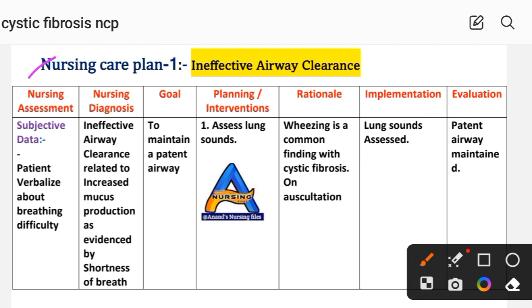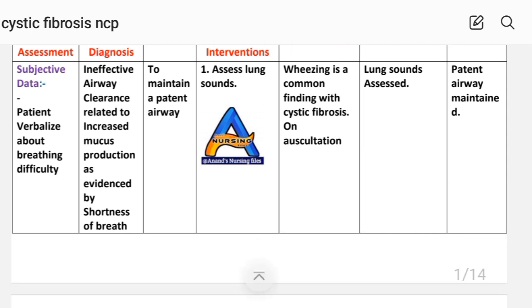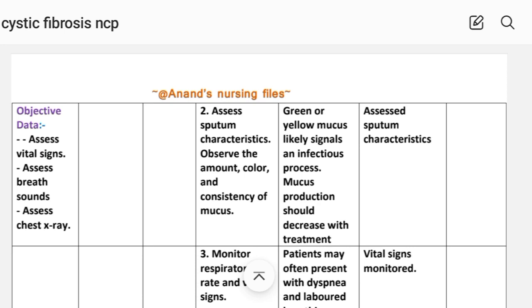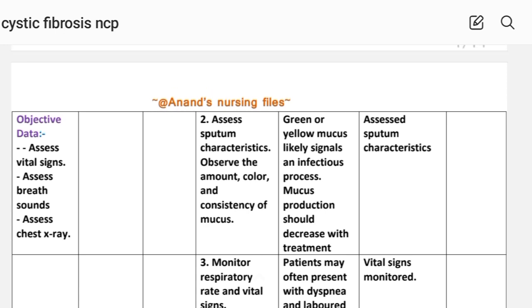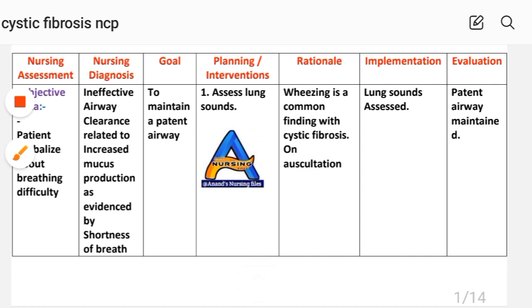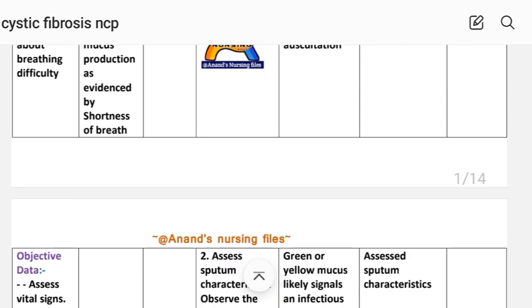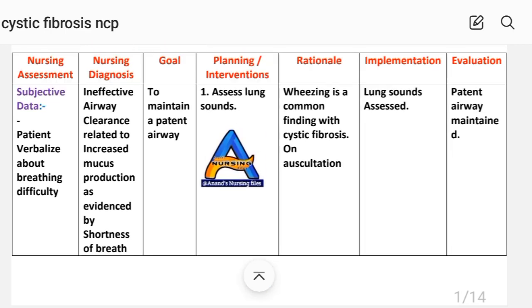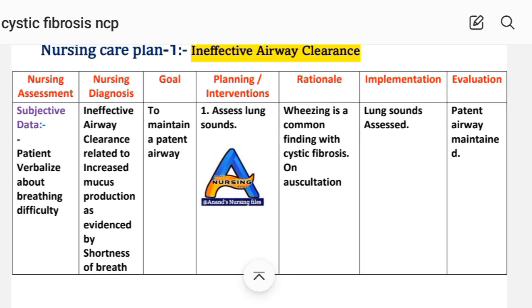Care plan number one covers ineffective airway clearance. Nursing assessment — subjective data: patient verbalizes about breathing difficulty. Objective data: assess vital signs, assess breath sounds, and assess chest X-ray. Nursing diagnosis: ineffective airway clearance related to increased mucus production, as evidenced by shortness of breath. Goal: to maintain patent airway.